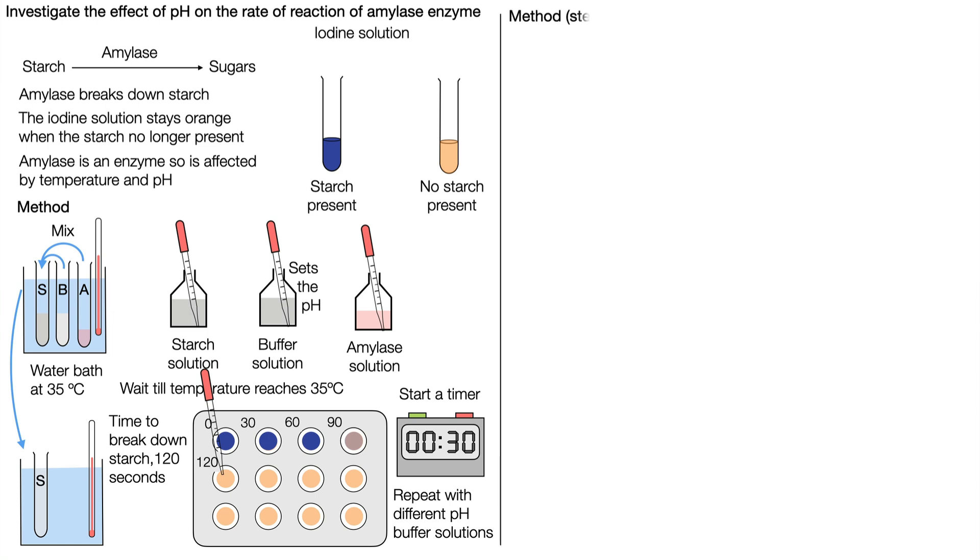So now we can write down the method. One: place two centimeters cubed of starch solution, pH buffer solution, and one centimeter cubed of amylase solution to test tubes in a water bath at 35 degrees Celsius.